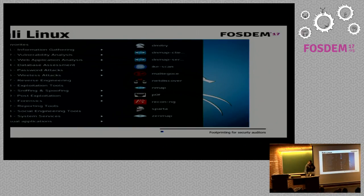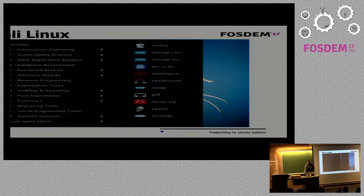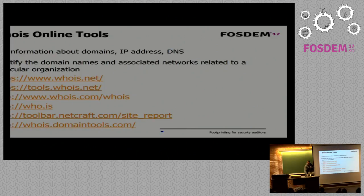The main tools I will comment on are available in Kali Linux. Kali Linux is a distribution oriented to pen testing. In this distribution we can find Maltego, Nmap, Recon-ng, Sparta for scanning ports, and ZenMap, which is a graphical version of Nmap.